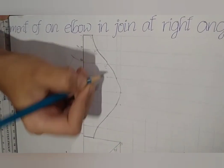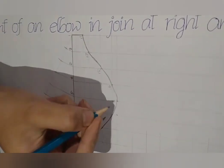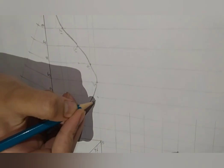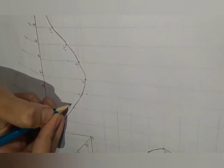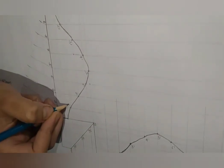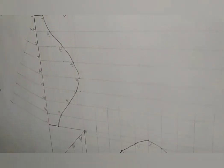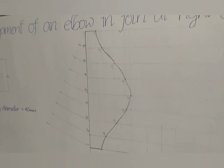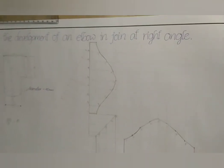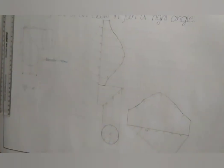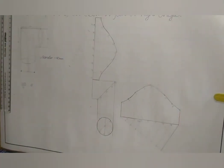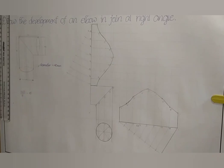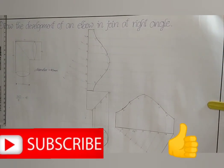If we open the portion, we can see the view depends on this. So this is the required development surface of an elbow in joint at right angle. Thanks for watching.